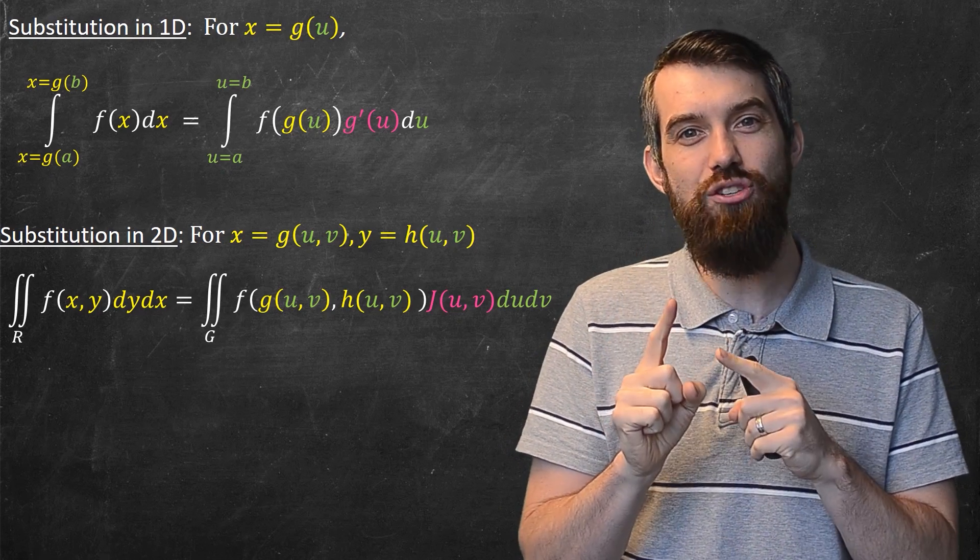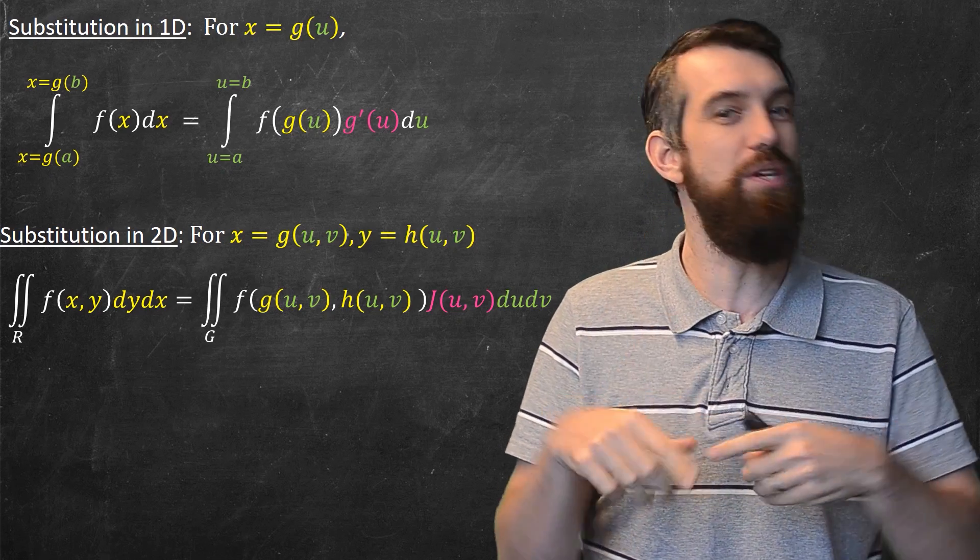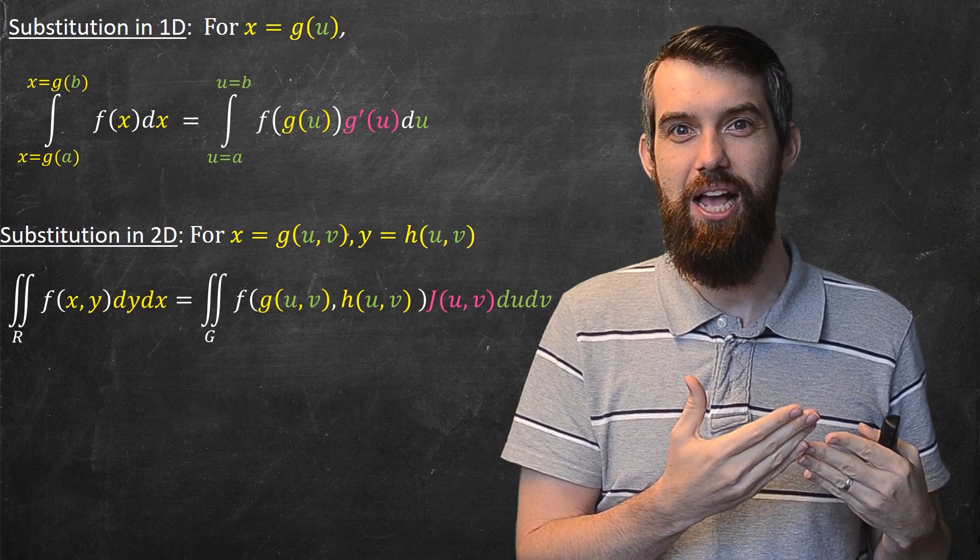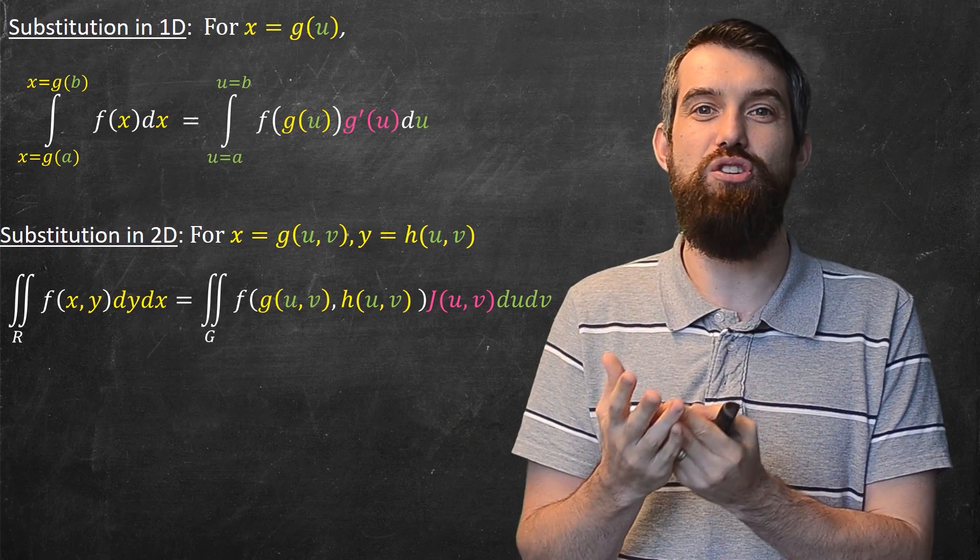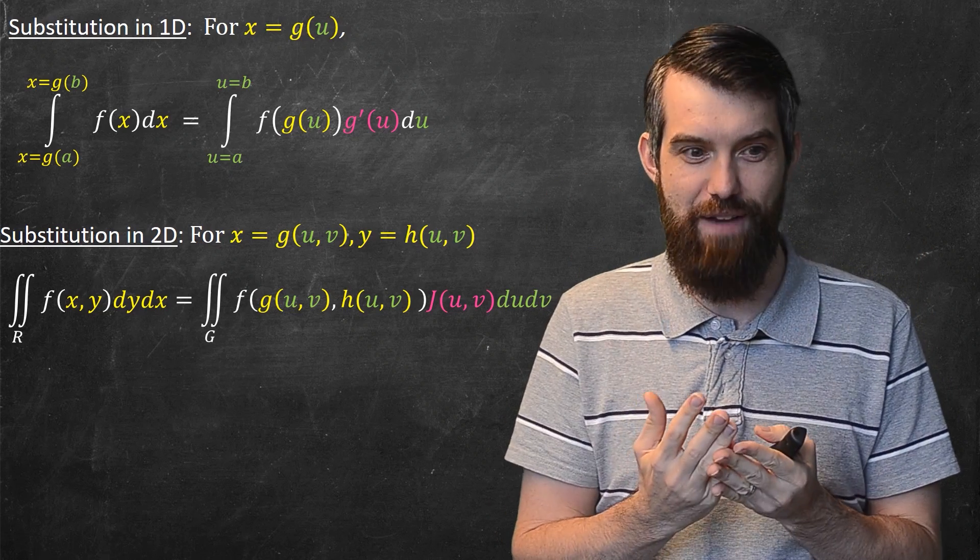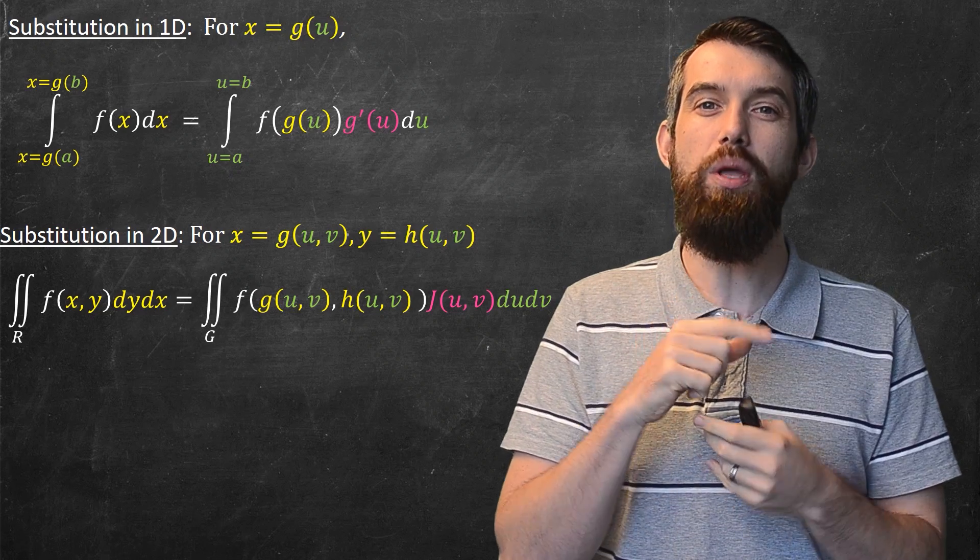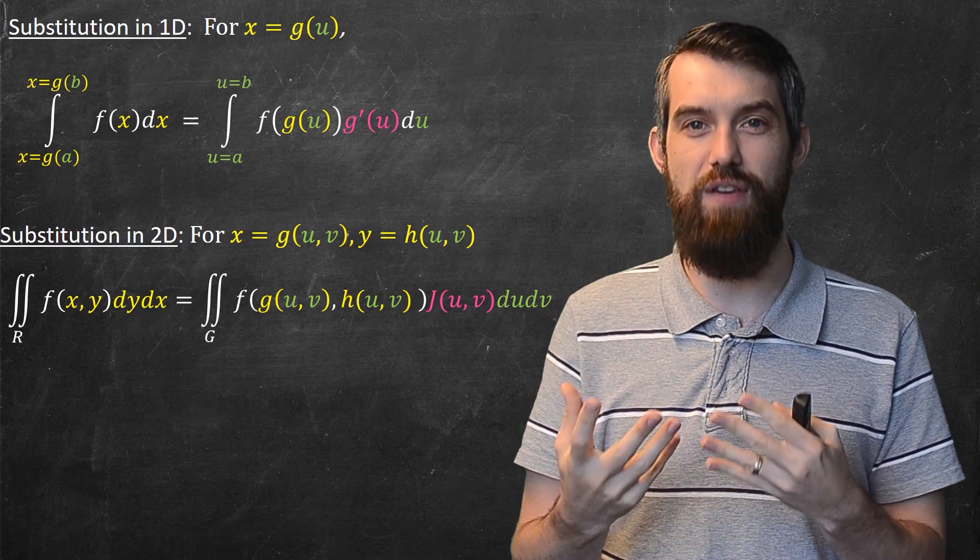And then the dx dy transforms into a du dv, but just like in the single variable case, you have to have a multiplicative factor. We're going to call this multiplicative factor, no longer g prime, we call it j of u and v.